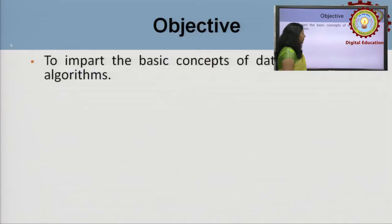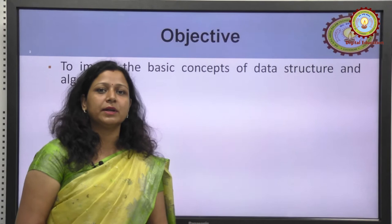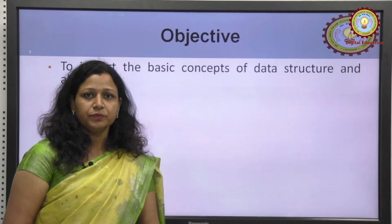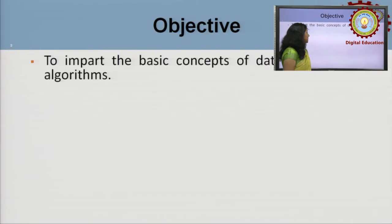Before coming to the subject, we should know how to study it and what the objectives are. If we study any subject, there must be some significance, and Data Structure is the core subject of Computer Sciences and Engineering. We need to understand why we study Data Structure — the first thing is to impart the basic concepts of Data Structure and Algorithms.